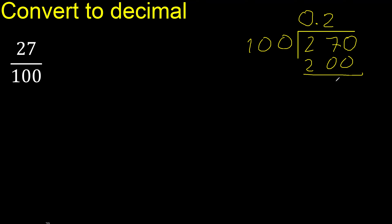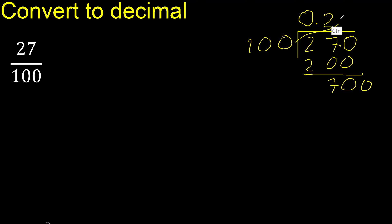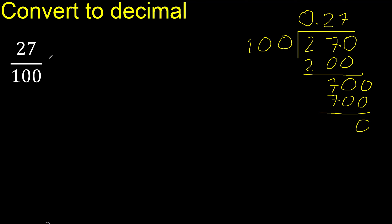Subtract. There is no number that goes down, so complete with 0 and the point is here. 100 multiplied by which number is nearest to 700? Multiply by 7 is exactly 700. Subtract, giving 0.